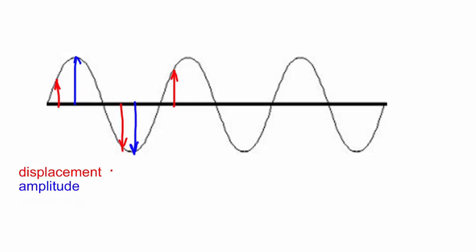We give displacement the symbol x and amplitude the symbol capital A. If we measure the distance from any point on one wave to the same point on the next wave, that could be measured from peak to peak here, or from trough to trough here, or indeed from zero point here to the next zero point.